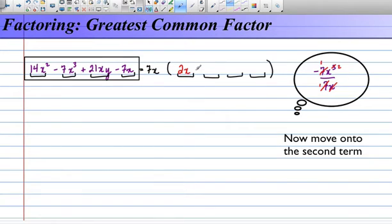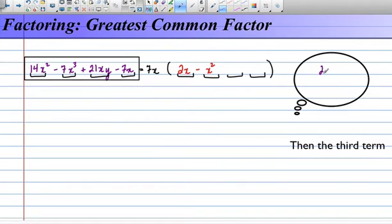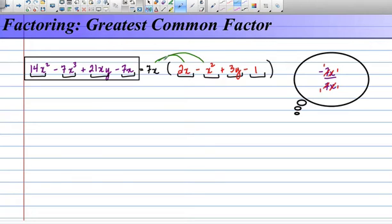negative x squared, positive 3y, positive 4y, and finally negative 1. As a check, you could perform a distribute to see if you get the original.